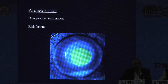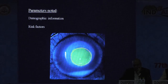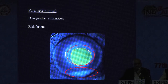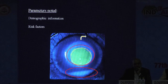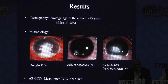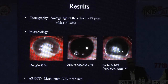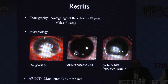A quantitative corneal monitoring semi-automated software package developed from previous studies was used for image-based analysis. Demographic information and patient risk factors were gathered. The height and width of epithelial defects, stromal infiltrate, presence of hypopyon, degree of corneal thinning, depth of infiltrate, and consolidation at the edges was noted. The average age of our cohort was 47 years with a predominance in males. Fungi contributed to the majority, followed by culture-negative and bacterial cases. The mean inner corneal diameter was 9.5 mm.